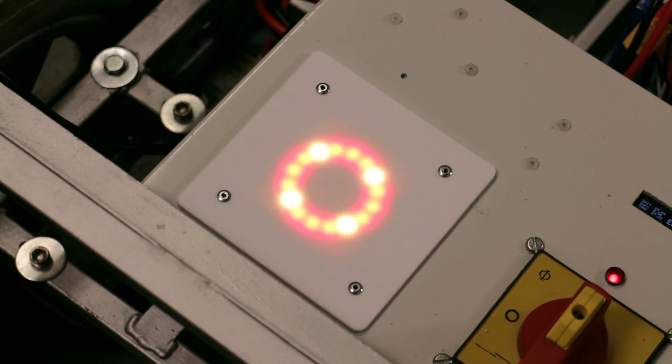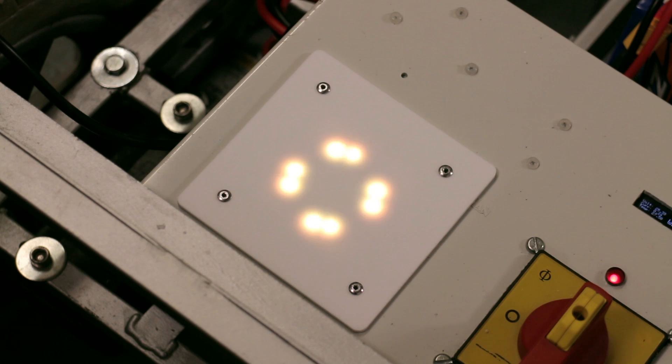In addition to the green successful state, you can also see here the error state, which is a red rotating ring. And the warning state, which is again a rotating but slightly more subtle yellow light.